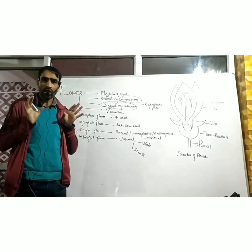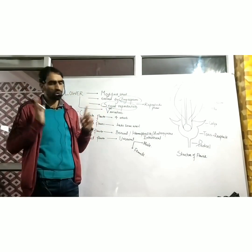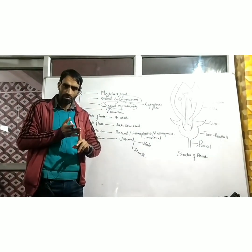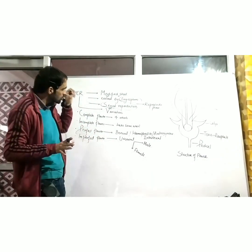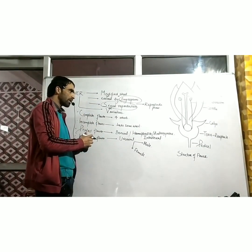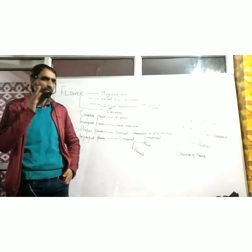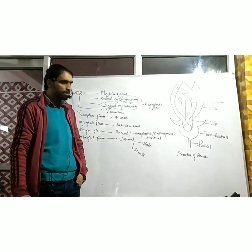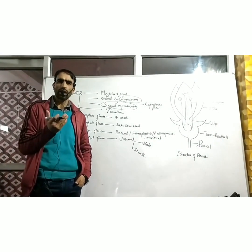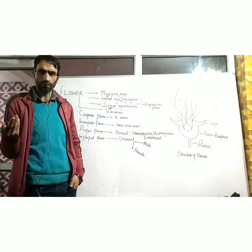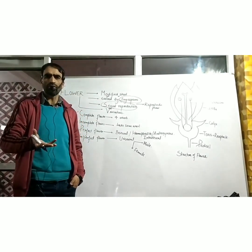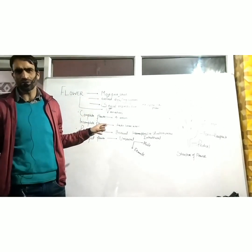So, angiosperms — flowering plants — have evolved the flower. But remember that other plants such as algae, bryophytes, and pteridophytes have not evolved this structure. The flower is a modified shoot to perform sexual mode of reproduction. And among different angiosperms, there is a tremendous variation and diversity in terms of structure, color, symmetry, and shape of the flower.